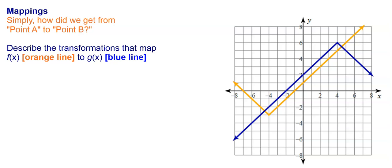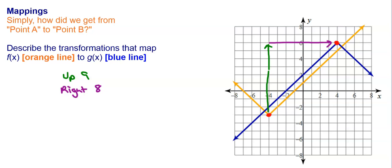Let's look at another one. Again, we're starting with the orange line and we're going to end at the blue line. In this case, we have to go up nine, and then we have to go to the right eight. Now this blue one is inverted compared to the orange one, so it's flipped or inverted. If I go up one over one, I'm still on the orange one. Since this one's flipped, I go down one over one and I'm still on the function, so there was no size change. So to transform the orange line into the blue line, we go up nine, right eight, and invert it.